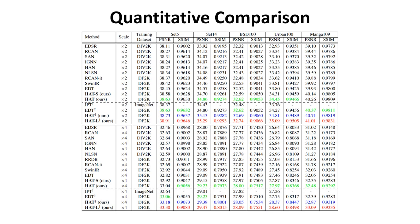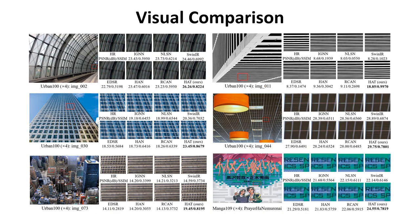Here, we provide some quantitative results. Red, blue, and green texts indicate the best, second best, and third best results respectively. As one can see, our method achieves the best performance. We also present results of visual comparison, and our approach obtains the best visual quality with the clearest textures.